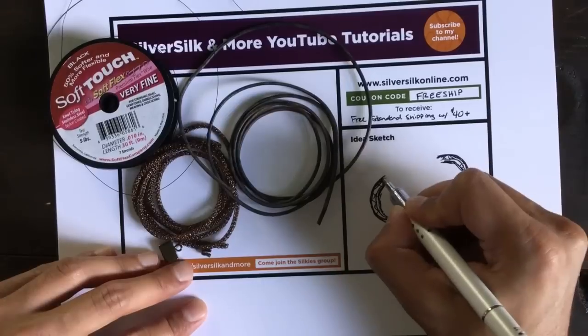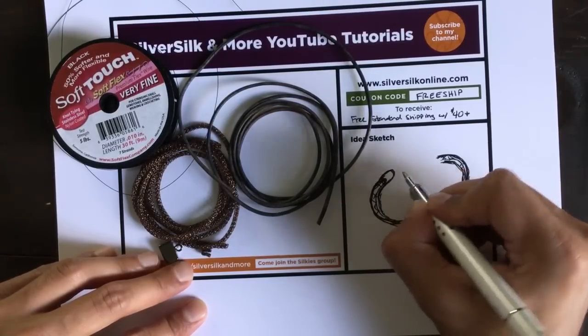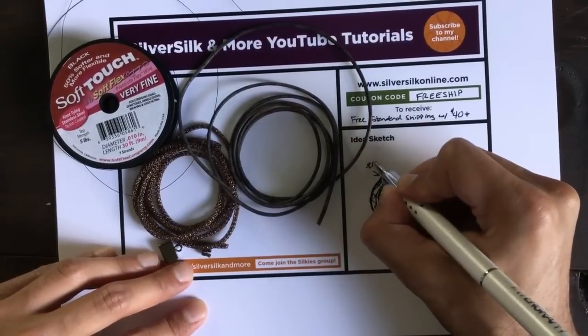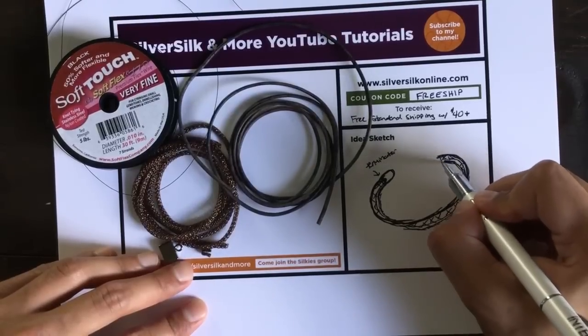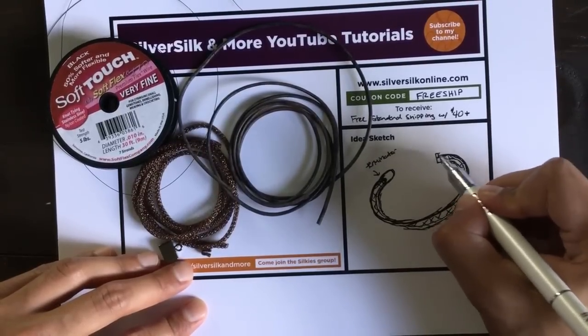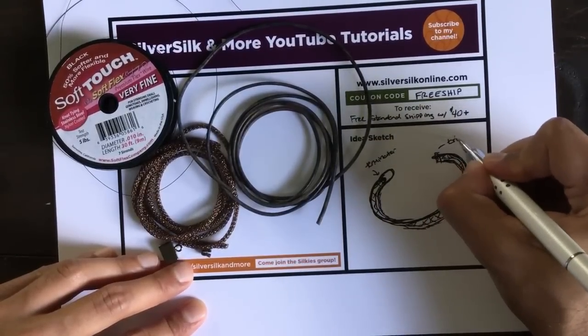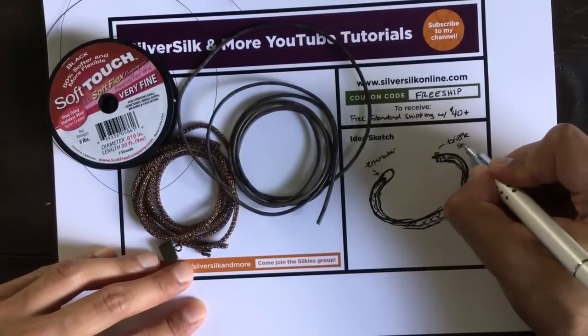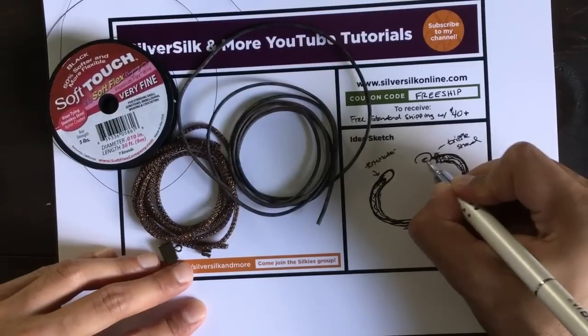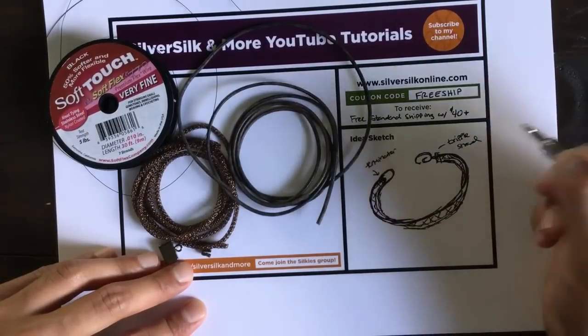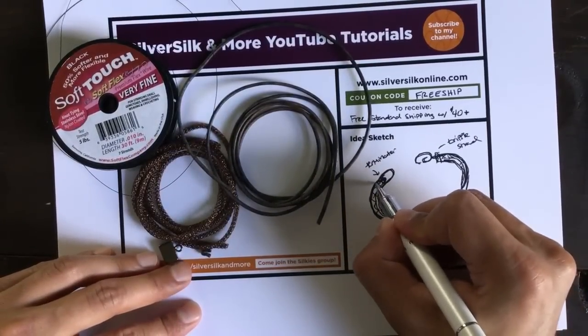We'll put a loop over here with the leather cord, put a little terminator on one end of the capture chain. On this side I think what we can do is put a triple strand end cap with our chosen clasp. I don't really know what our clasp will be but we'll figure out something.